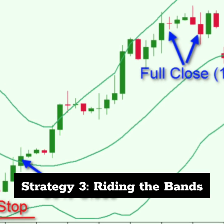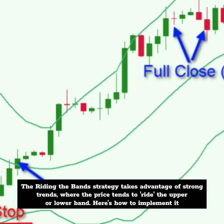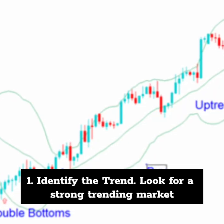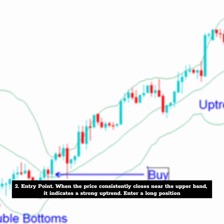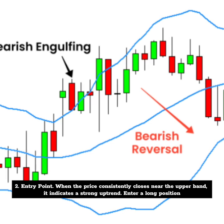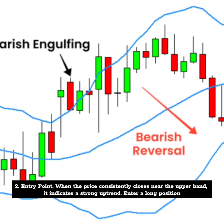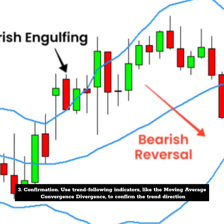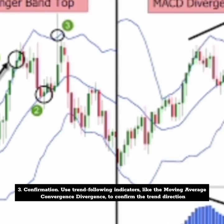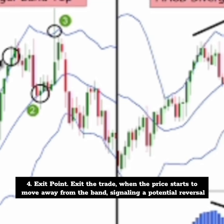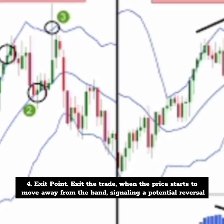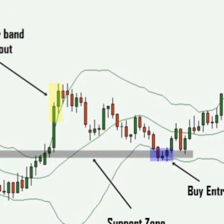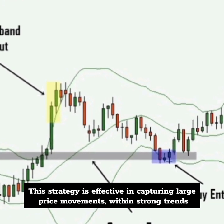Strategy 3: Riding the Bands. The Riding the Bands strategy takes advantage of strong trends where the price tends to ride the upper or lower band. First, identify a strong trending market. For the entry point, when the price consistently closes near the upper band, it indicates a strong uptrend — enter a long position. Conversely, if the price closes near the lower band, enter a short position. Use trend-following indicators like the Moving Average Convergence Divergence (MACD) to confirm the trend direction. Exit the trade when the price starts to move away from the band, signaling a potential reversal. You can also use a trailing stop to lock in profits as the trend progresses. This strategy is effective in capturing large price movements within strong trends.